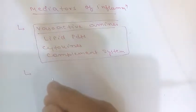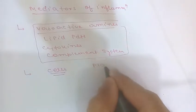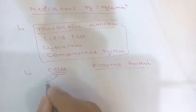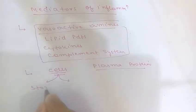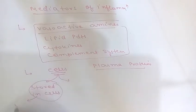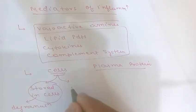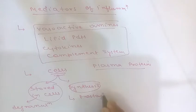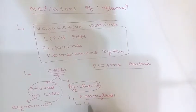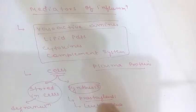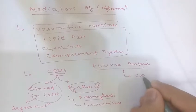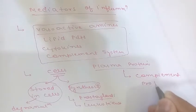Mediators are either secreted by cells or generated from plasma proteins. Cell-derived mediators are of two types: those stored in cells in the form of granules — released by degranulation via exocytosis when a stimulus arrives — and those synthesized de novo in response to a stimulus, such as prostaglandins and leukotrienes. The major cell types that produce mediators are macrophages, dendritic cells, and mast cells. Plasma-derived mediators are mainly complement proteins.